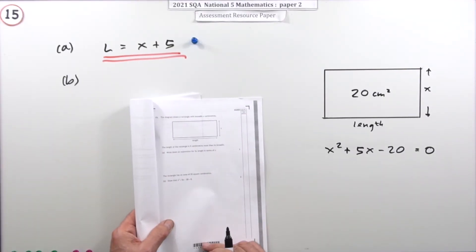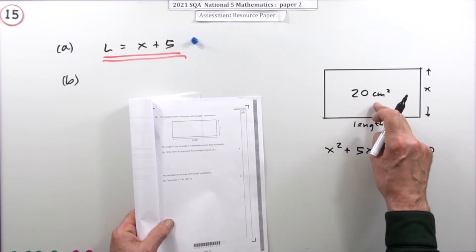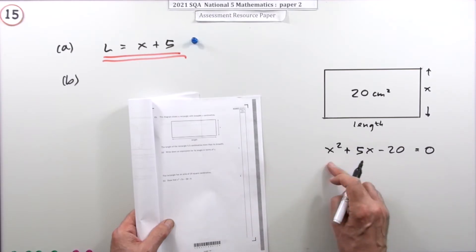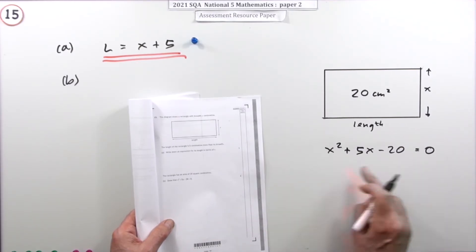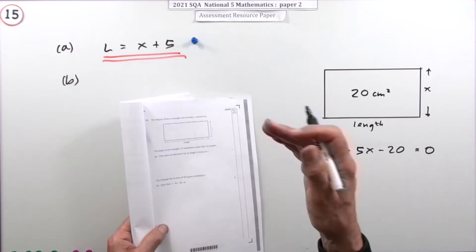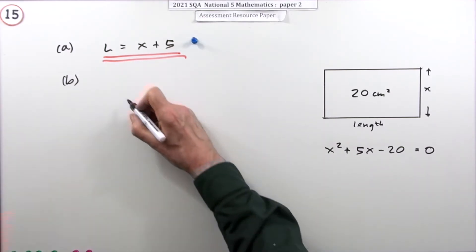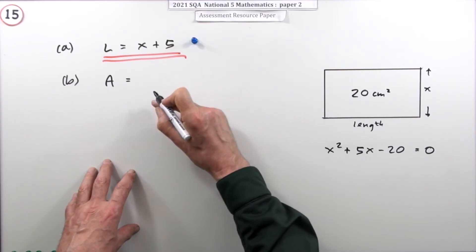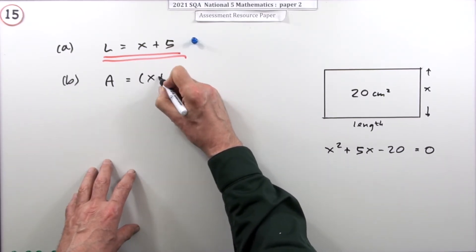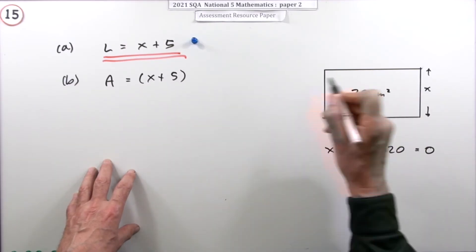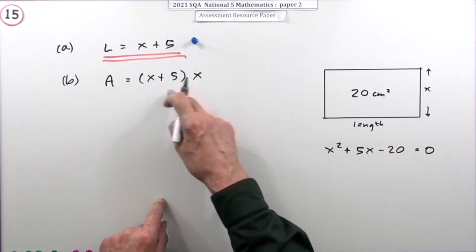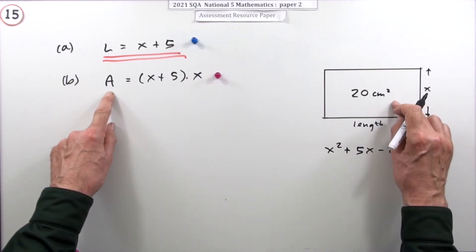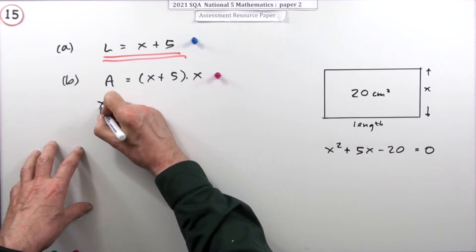In part b, for two marks, you're told the rectangle has an area of 20 square centimetres, and it says show that this is the case. It must be something to do with the area, so work out the area. The area of the rectangle is length times breadth — the length is x plus five and the breadth is x.